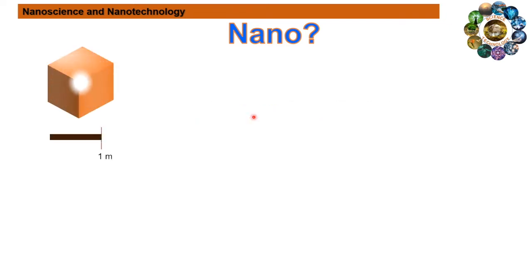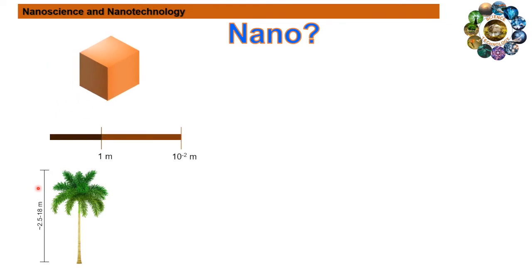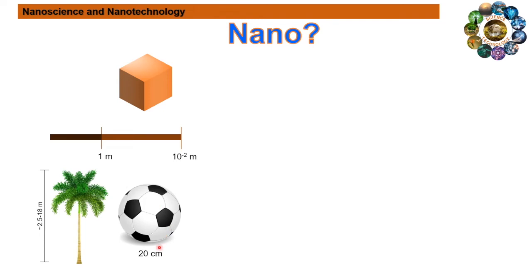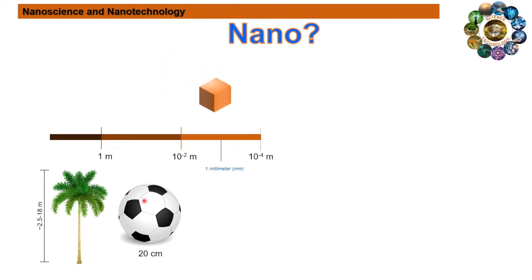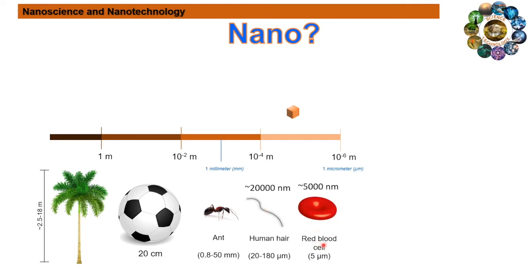At the meter scale, the height of a palm tree is about 2 to 18 meters. Reducing to the centimeter scale, the average size of a football is about 20 centimeters — relatively smaller than a palm tree. At the millimeter range, the size of an ant is about 0.8 to 50 mm. Further reducing to the micrometer range, the size of a human hair falls into this scale — about 20 to 180 micrometers. The size of a blood cell in the human body is about 5 micrometers.